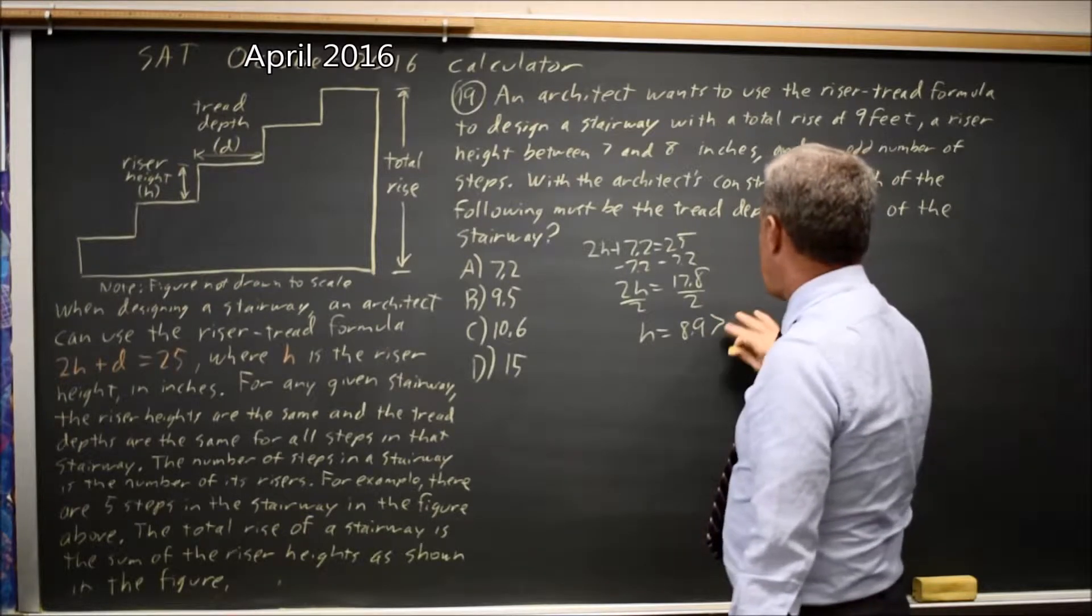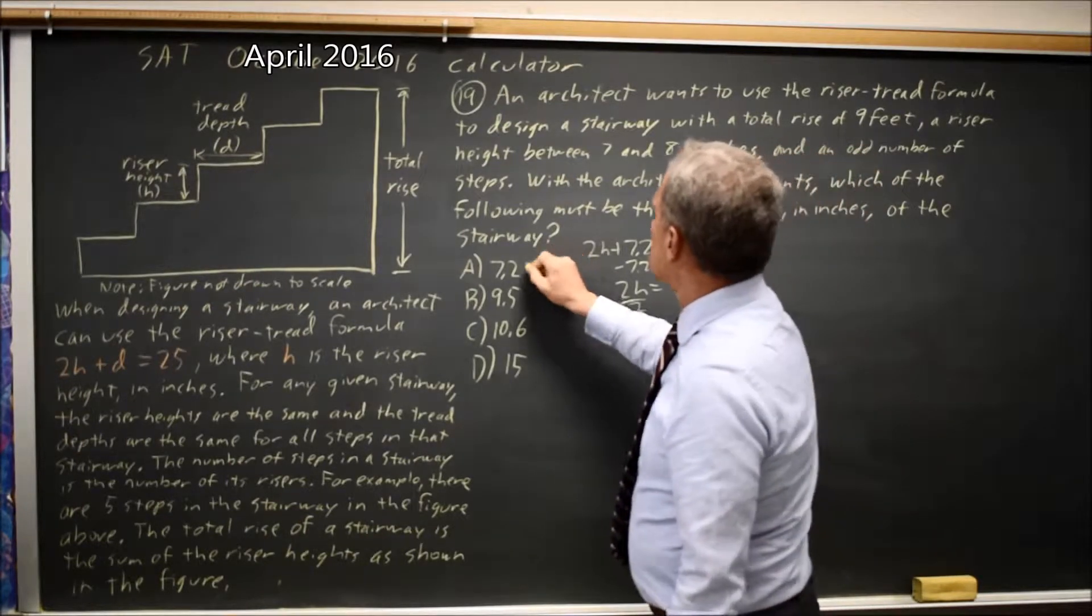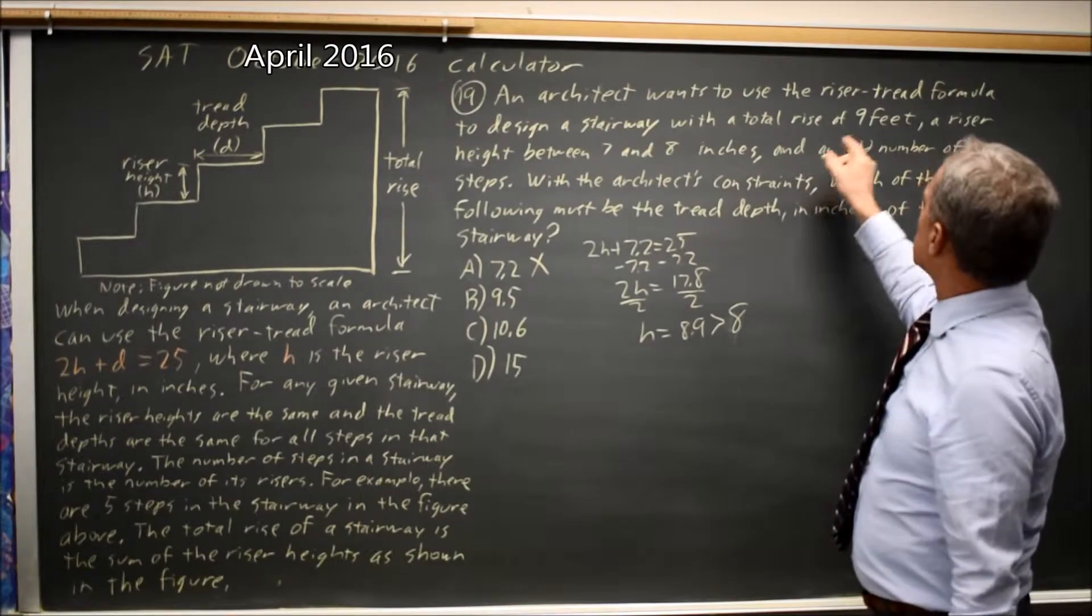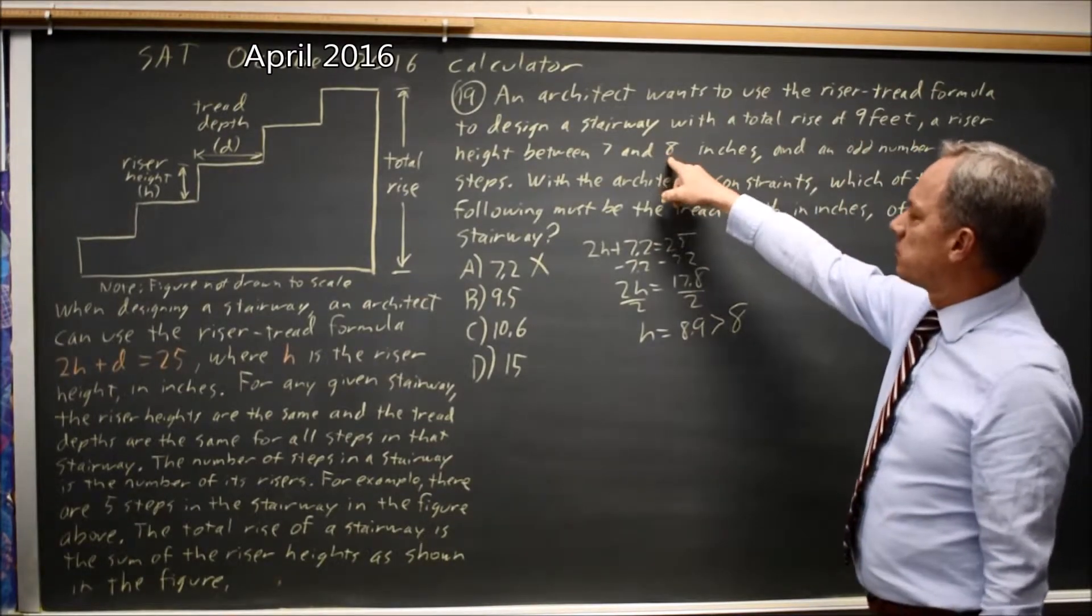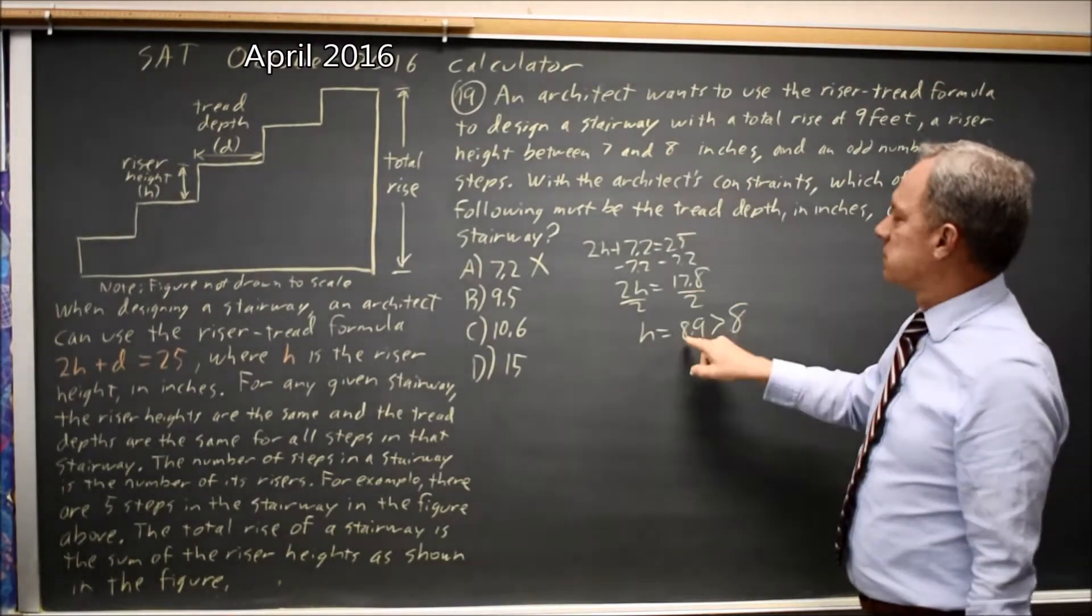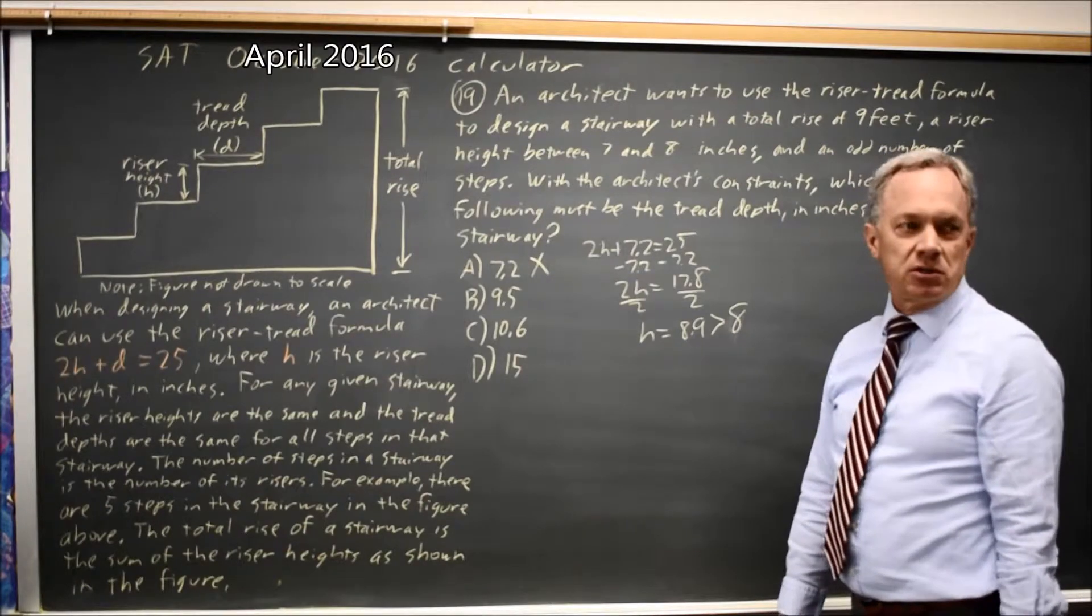which is greater than 8. But we were told that the riser height should be between 7 and 8, and this is greater. So 7.2 does not work.